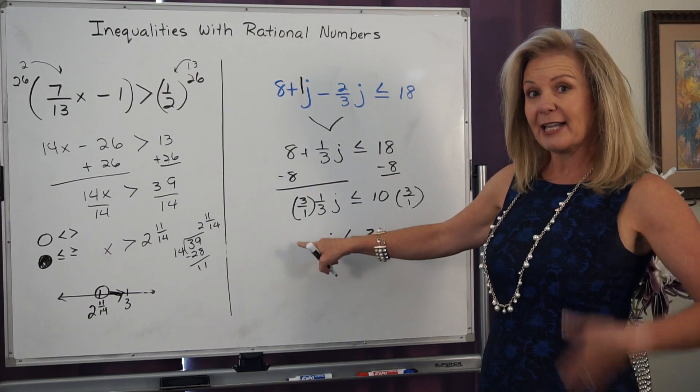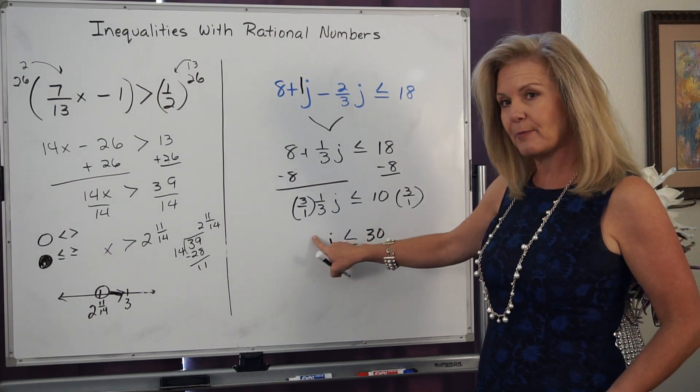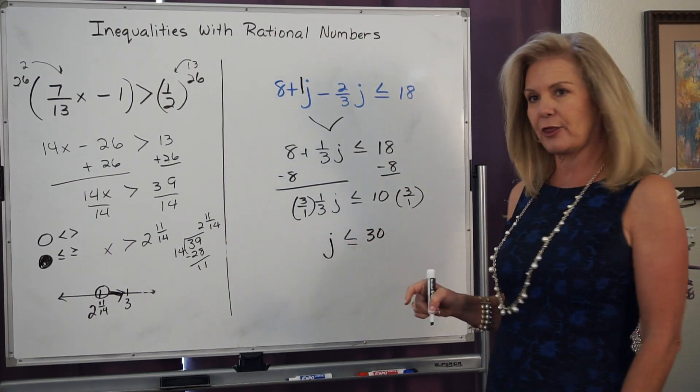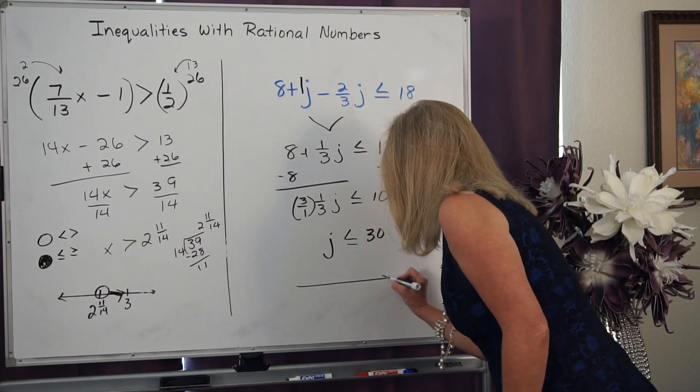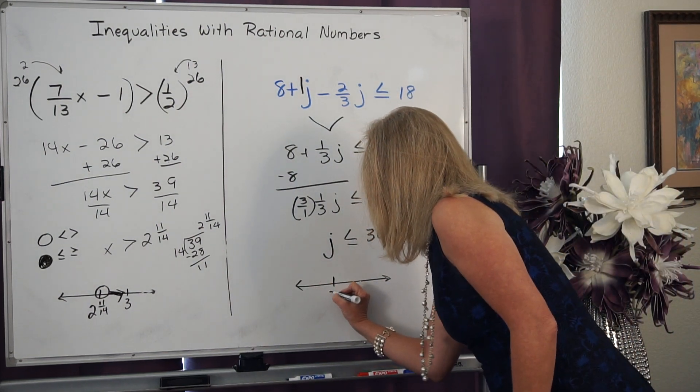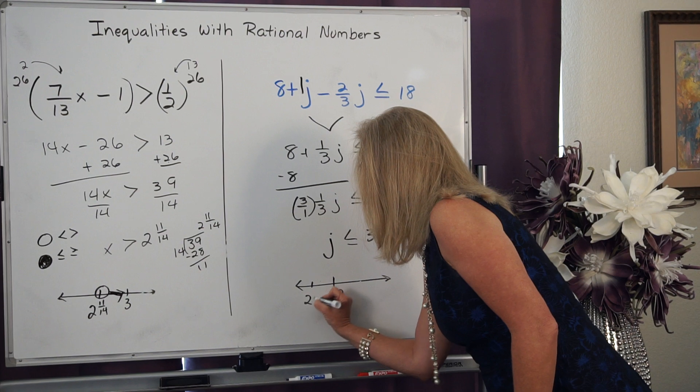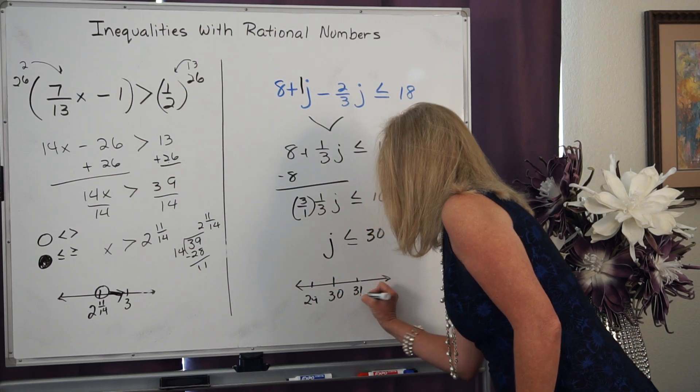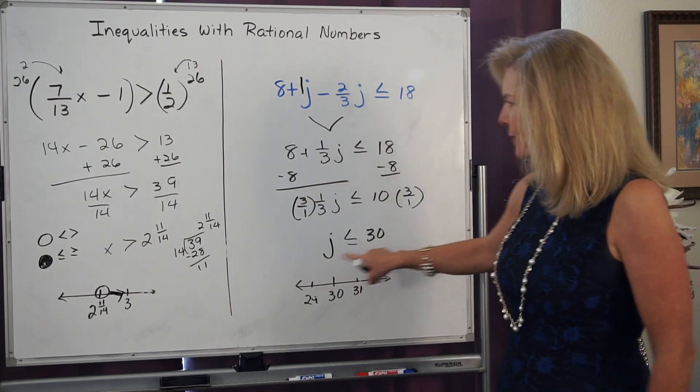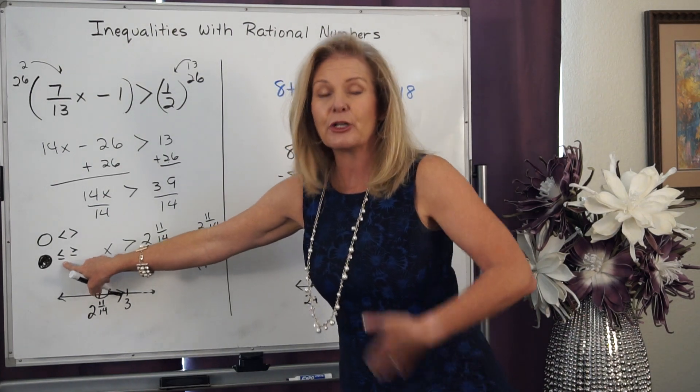So my solutions are all numbers that are less than or equal to 30. I'm going to take my number line. I'm going to put 30. I'm going to put 29. And I'm going to put 31. It's a closed circle because it's less than or equal to.